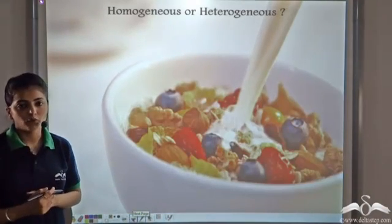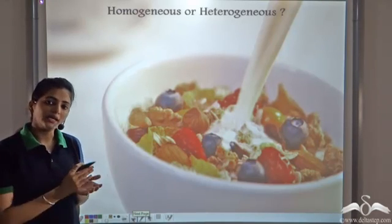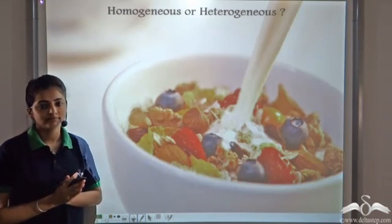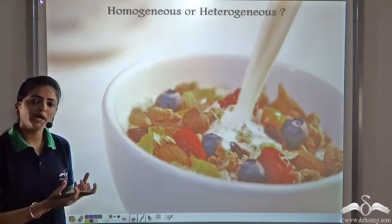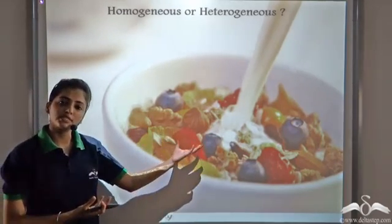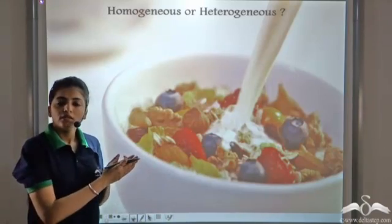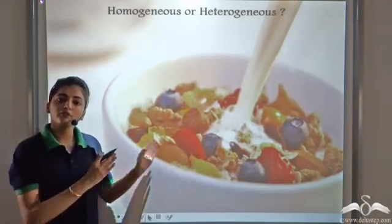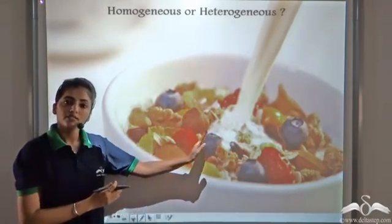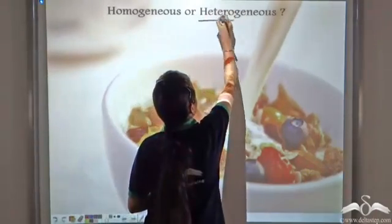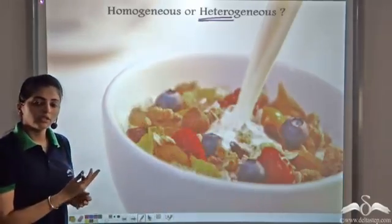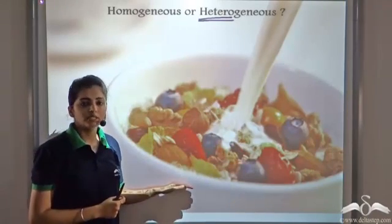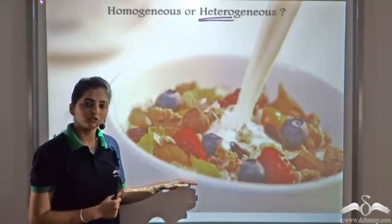So when you take cornflakes in the morning for breakfast and add milk and dry fruits to it — is it a heterogeneous or a homogeneous mixture? Well, if you observe clearly, you might be able to make out the difference. There might be more of dry fruits in one part, there might be more of milk or cornflakes in the other. So when a substance has different proportions in different parts, such substances are heterogeneous. So this is a heterogeneous mixture.